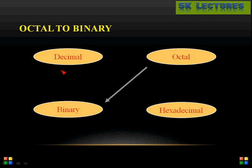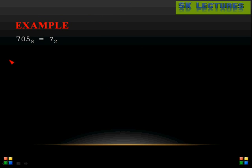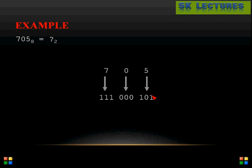For octal to binary conversion, each octal digit is expressed as its 3-bit binary equivalent. The maximum octal digit 7 can be expressed with 3 bits (111), so 3 bits are sufficient. For example, 705 base 8: 5 becomes 101, 0 becomes 000, and 7 becomes 111, giving the binary result 111 000 101.